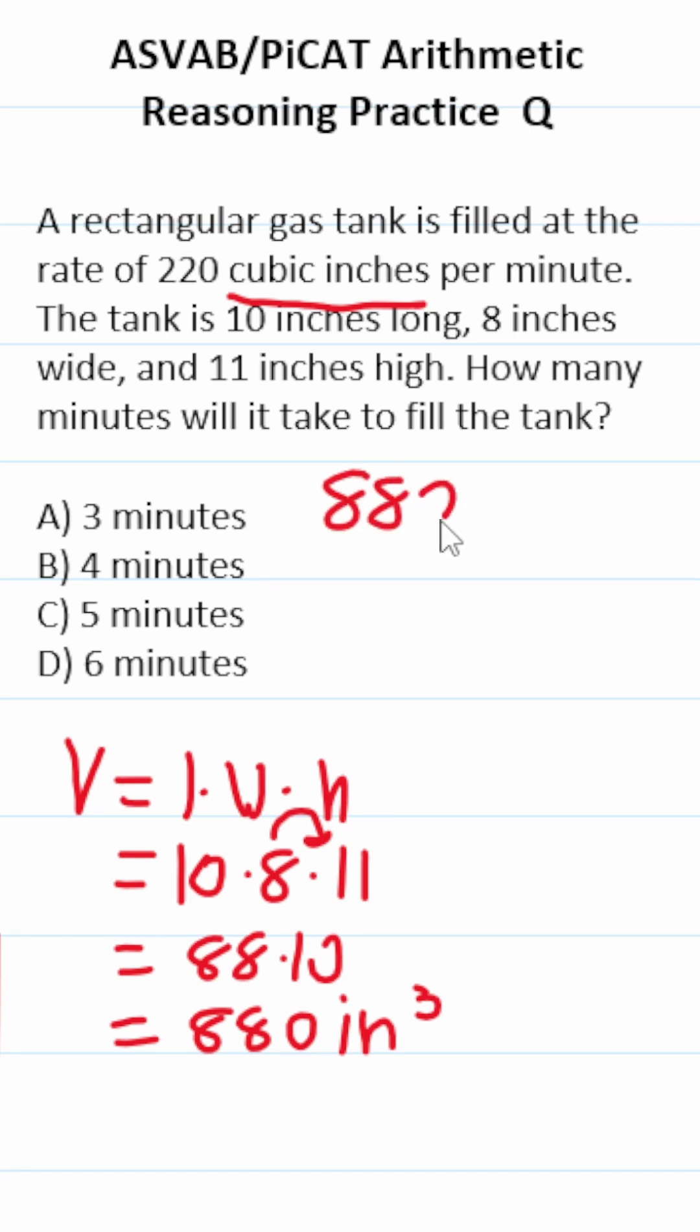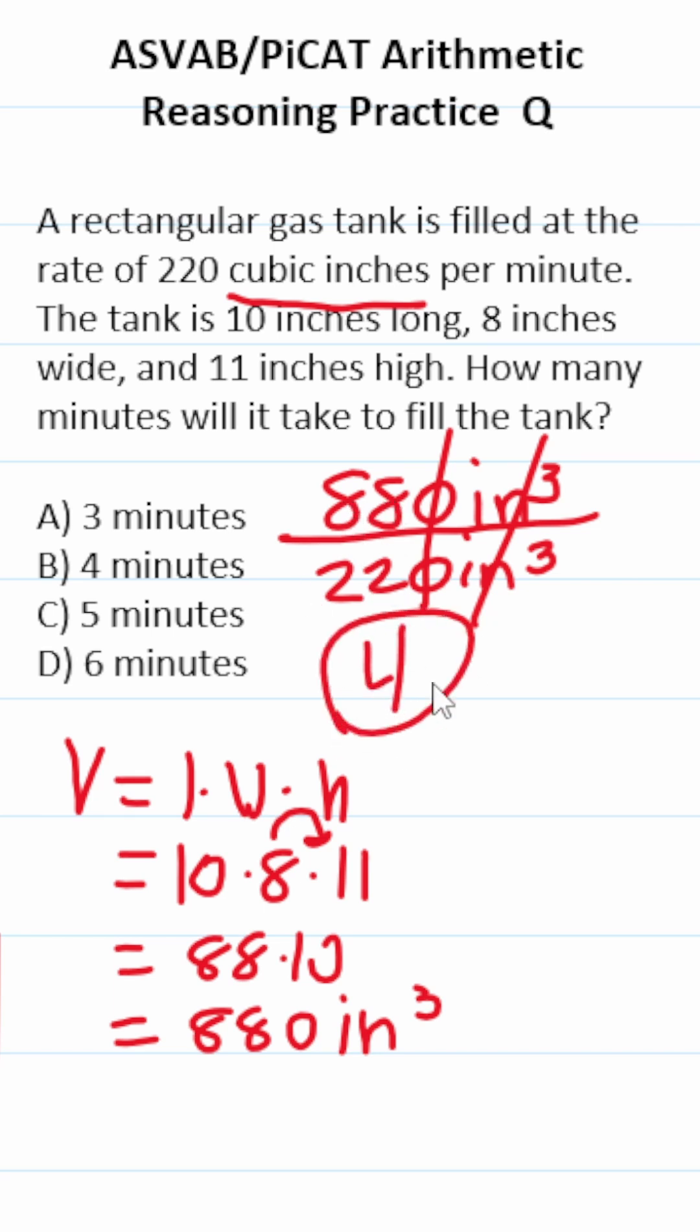Let's go ahead and write that up here. We're filling this gas tank at a rate of 220 cubic inches a minute, according to the problem. So we cross out these units, we cross out these corresponding zeros. 88 divided by 22 is going to be 4. So it's going to take B, 4 minutes to fill this gas tank.